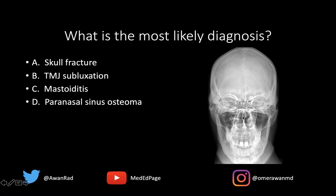This is the nasal septum, and these are the paranasal sinuses. There's no inferior orbital rim fracture here — no fractures here. Taking a look at the TMJ joints, the mandibular condyles are well seated along the temporal bones bilaterally, so there's no TMJ joint subluxation.